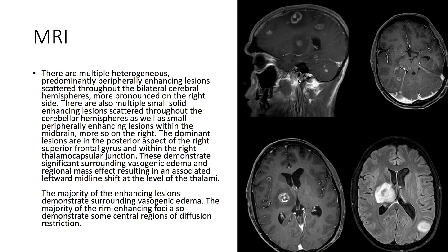On the MRI, we see multiple rim-enhancing lesions scattered throughout the bilateral cerebral hemispheres, more pronounced on the right side. We also see one here in the midbrain. The largest of the lesions are here in the frontal gyrus, as well as here in the right thalamocapsular junction. These demonstrate significant surrounding vasogenic edema and regional mass effect, resulting in an associated leftward midline shift at the level of the thalamus.